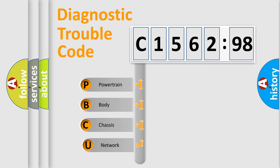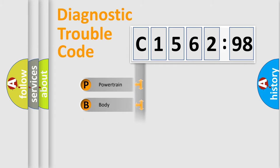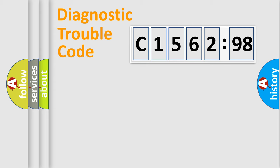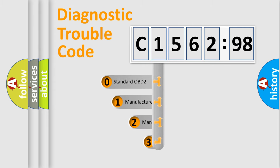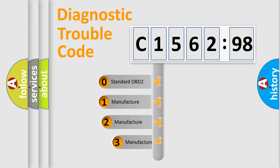First, let's look at the history of diagnostic fault code composition according to the OBD2 protocol, which is unified for all automakers since 2000. We divide the electric system of the automobile into four basic units: Powertrain, Body, Chassis, and Network.